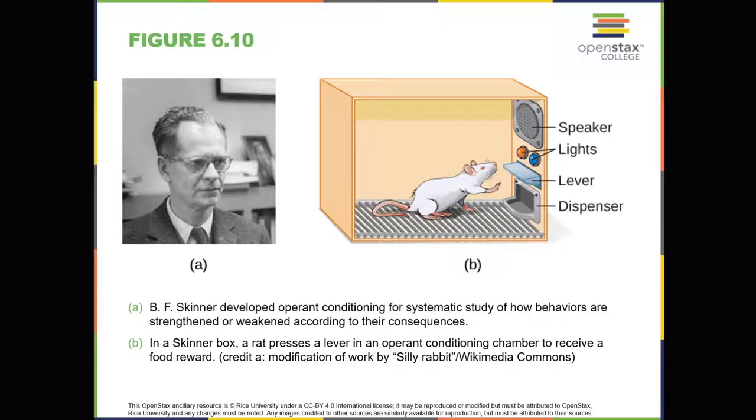Psychologist B.F. Skinner saw that classical conditioning is limited to existing behaviors that are reflexively elicited, and it doesn't account for new behaviors such as riding a bike. He proposed a theory about how such behaviors come about.